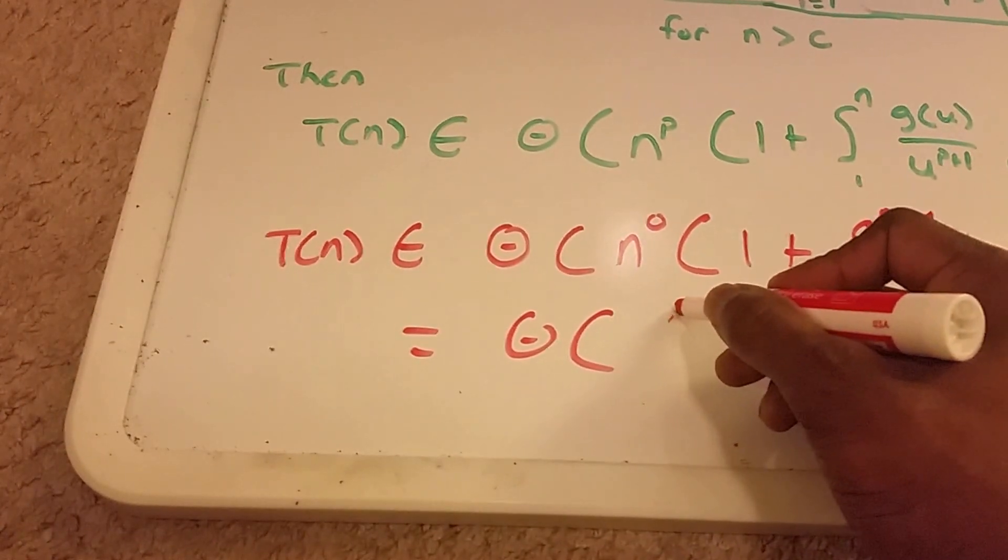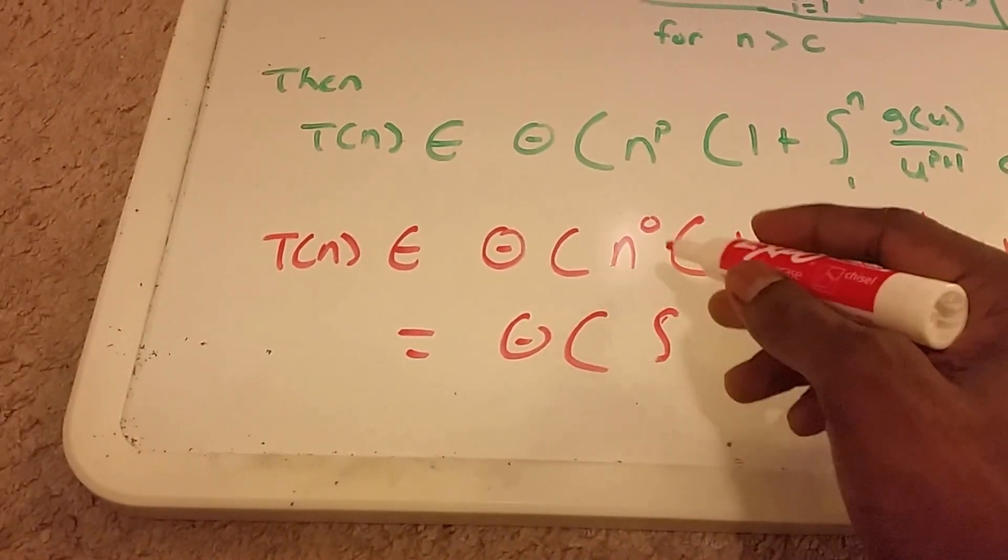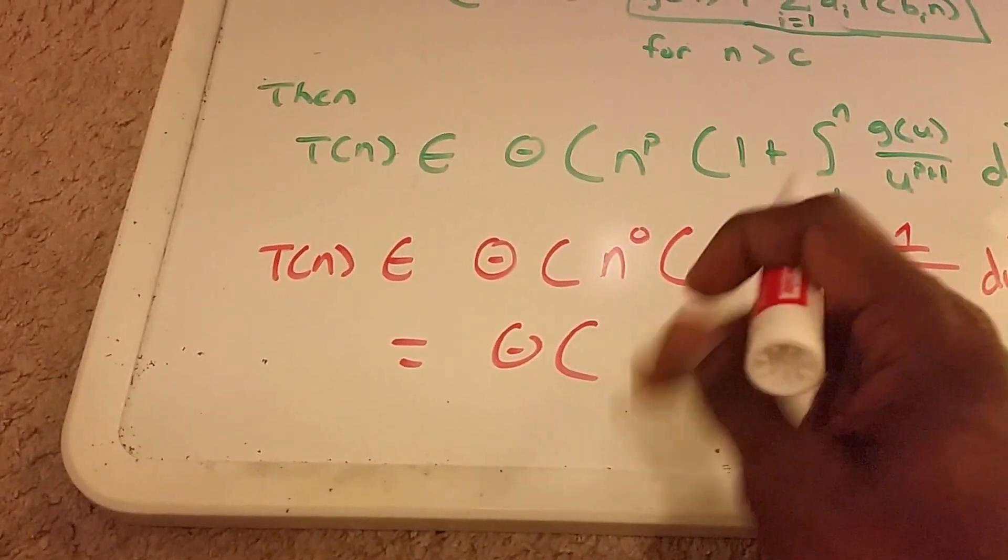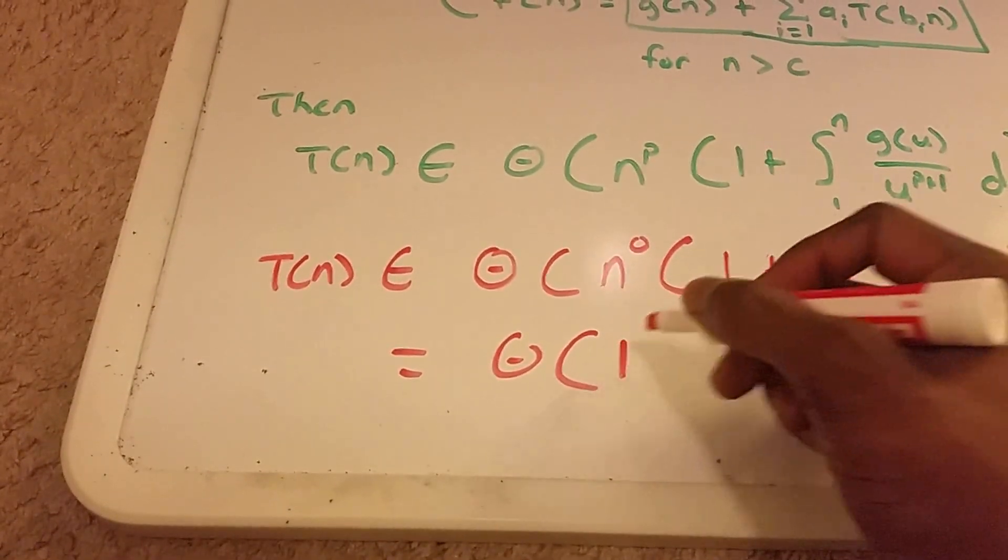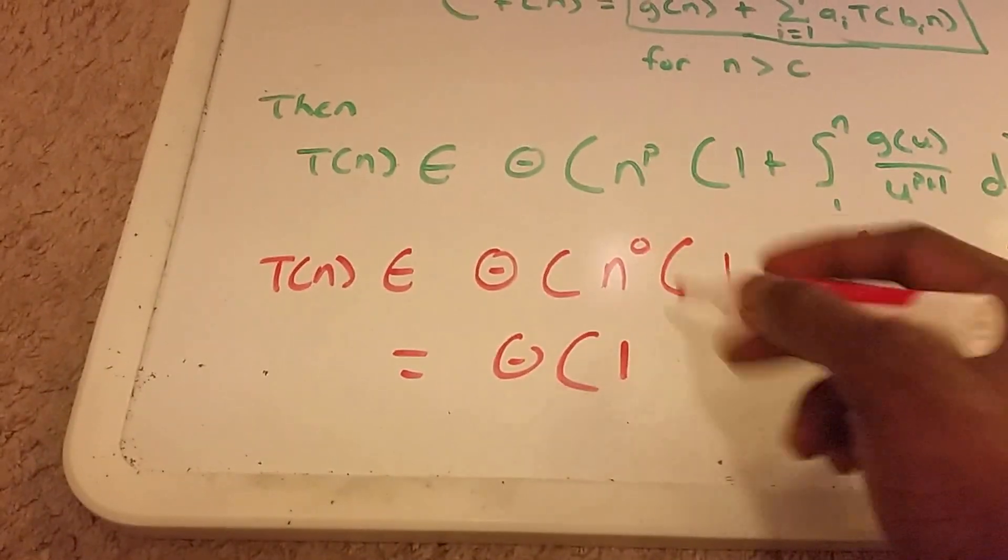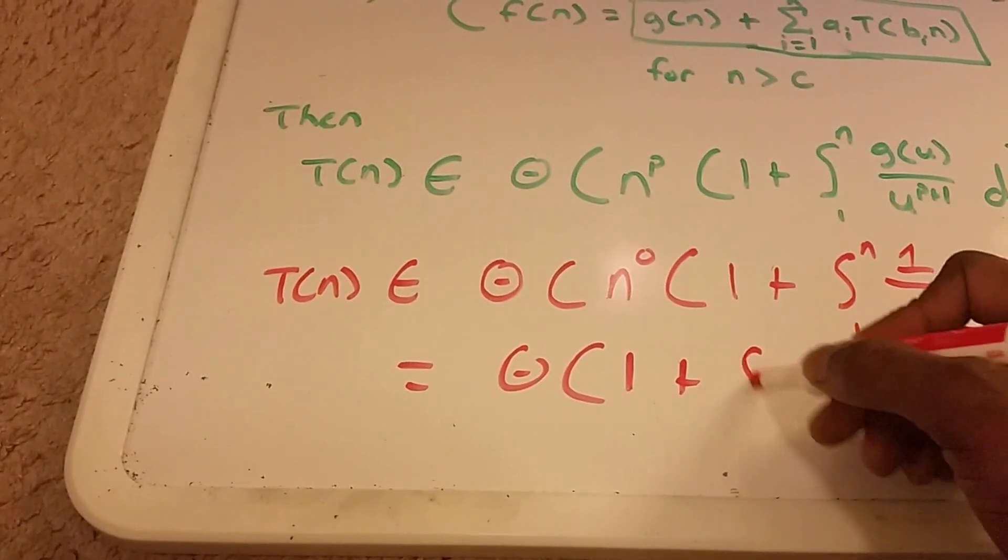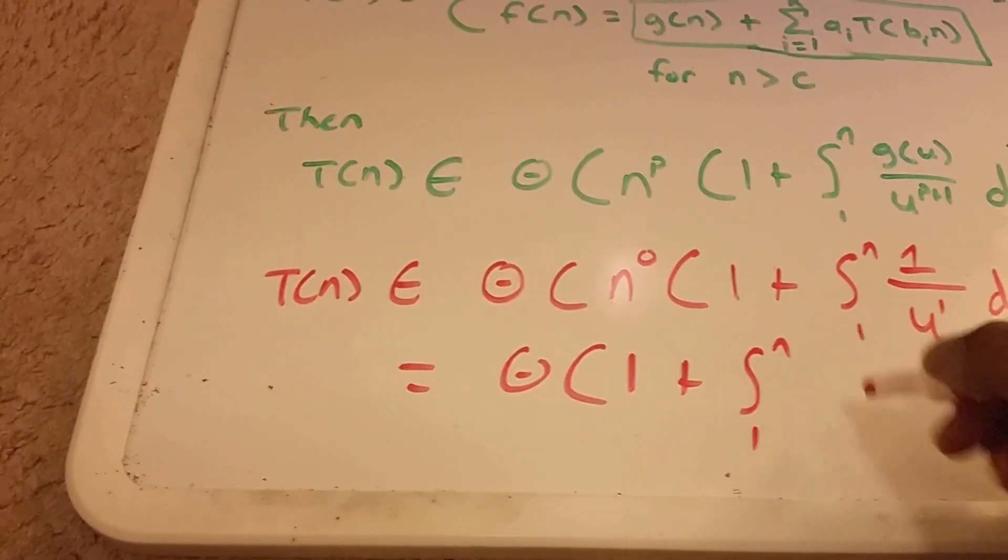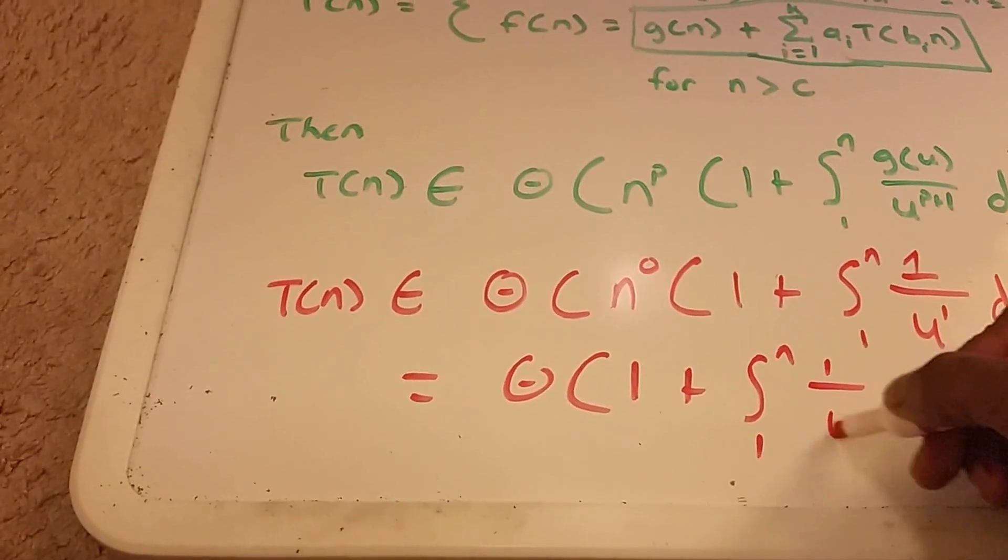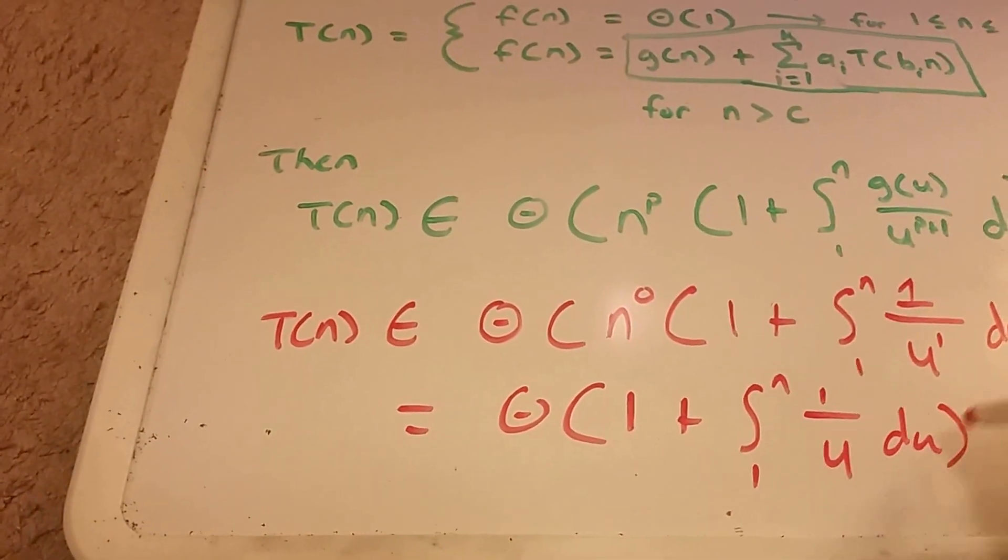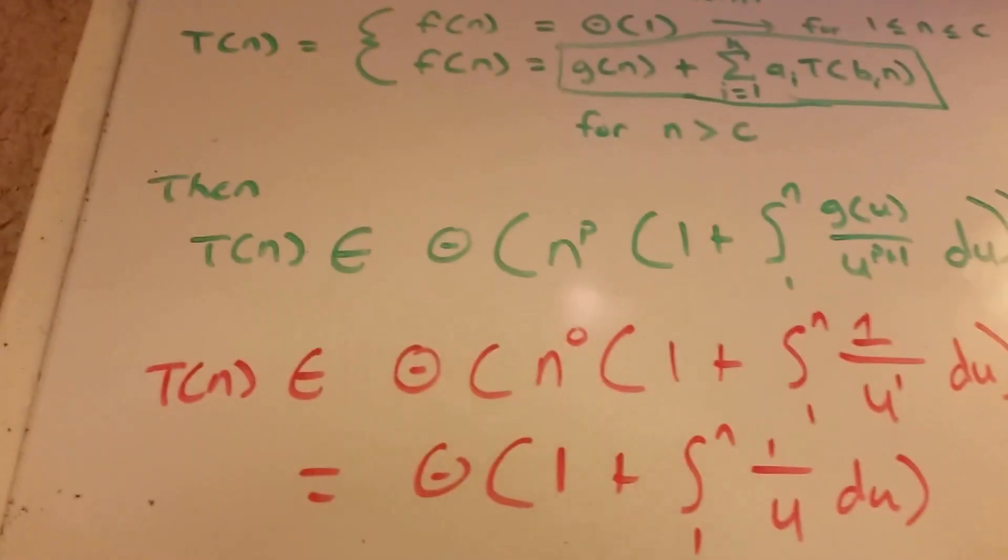Now we just get theta of 1 to the power of 0 is 1 times 1 plus the natural log from 1 to n, 1 over u du. Okay.